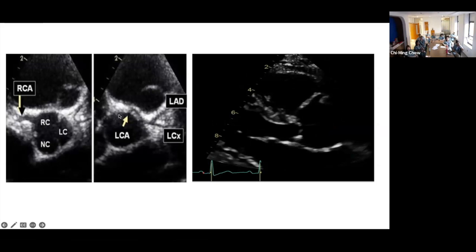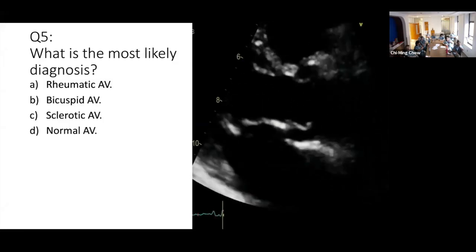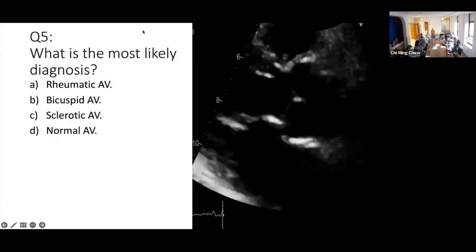Even in the stress echo guidelines, some labs will pulse-wave the left anterior descending artery during stress. It depends on the lab, but the point is that you can see these structures by echo. You can see it by TTE, and we can see it by TEE as well.